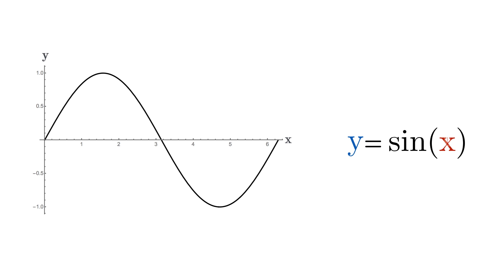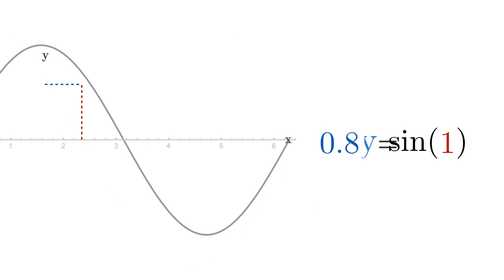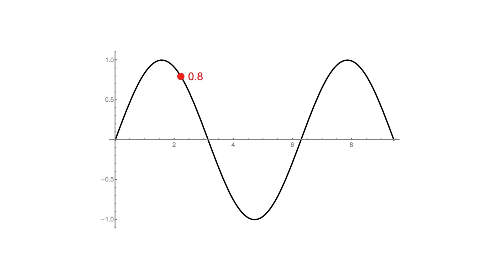For example, if we insert the value 1 into the function, we get a value of 0.8. As we insert values of increasing size, we can see that the resulting y value smoothly goes from 0 to 1, to 0, to minus 1, and then back to 0.